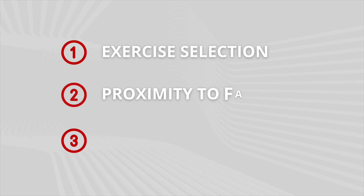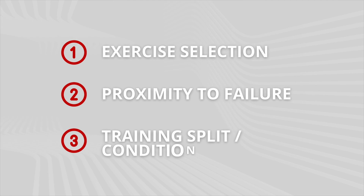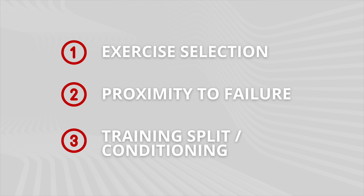We're going to break down the three main differences you need to consider when writing a program for a bodybuilder versus an athlete: one, exercise selection; two, proximity to failure; and three, training split and conditioning. We're going to talk about the program design variables for these three things and what you might do to tweak your program to optimize for a bodybuilder versus an athlete. Let's go ahead and dive into it.